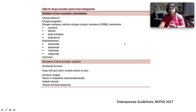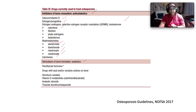In summary from the NOFSA guidelines: anti-catabolic agents — inhibitors of bone resorption — include calcium, vitamin D, estrogen, progestins, estrogen analogues, SERMs, testosterone, raloxifene, tibolone, phytoestrogens, and bisphosphonates (alendronate, ibandronate, risedronate, zoledronate, calcitonin). Anabolic agents — stimulators of bone formation — include parathyroid hormone. Drugs with dual or complex actions include strontium ranelate, vitamin D metabolites, anabolic steroids, and thiazides/indapamide.